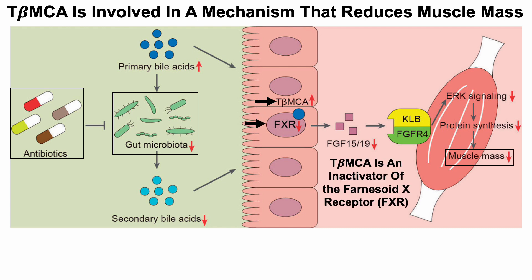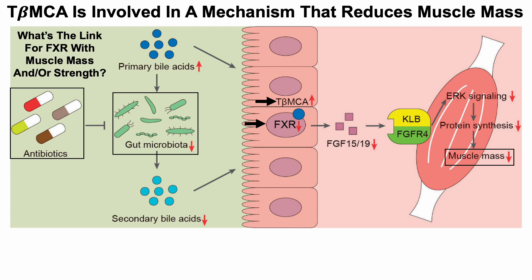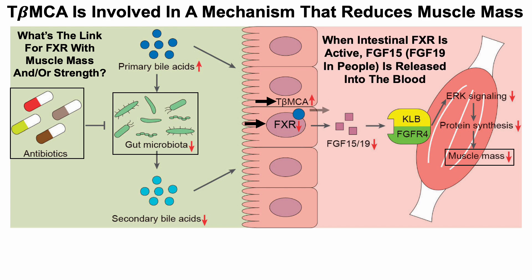Tauro-beta-MCA is an inactivator of the farnesoid X receptor (FXR), as shown in the intestine. We can see this more specifically by looking at the percentage of FXR activation as a function of concentration for two different bile acids, including tauro-beta-MCA. As the tauro-beta-MCA concentration increases, FXR activation decreases. When intestinal FXR is active, FGF-15 — or FGF-19, which is the human version found in mice — is released into the blood.